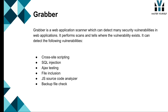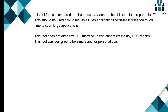Grabber is a web application scanner which can detect many security vulnerabilities in web applications. It performs scans and tells where the vulnerability exists. It can detect cross-site scripting, SQL injection, Ajax testing, file inclusion, JS source code analyzer, and backup file checks. It is not as fast as other security scanners, but it is simple and portable. It should only be used to test small web applications because it takes too much time to scan large applications. This tool does not offer a GUI interface, cannot create PDF reports, and was designed to be simple and for personal use.